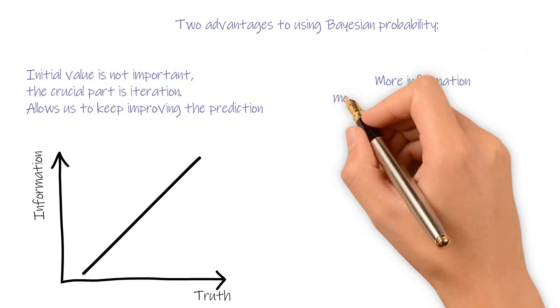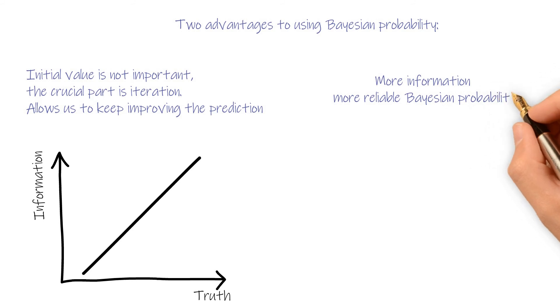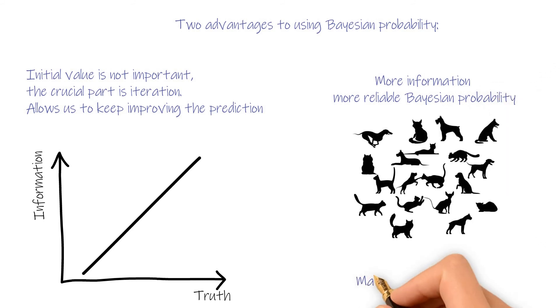Second, more information, more reliable Bayesian probability. How to train the computer to recognize dog and cat? The answer is machine learning and big data. There is a method called Naive Bayes. It is trained by a lot of dog and cat pictures. Now, the accuracy is more than 99%, better than human beings.